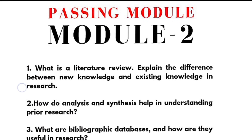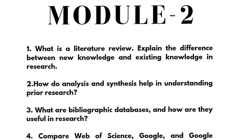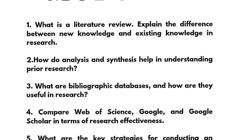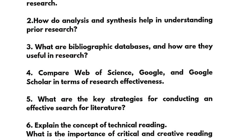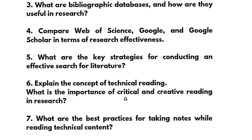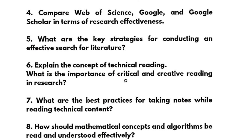Next we have Module 2, another passing module. What is a literature review — explain the difference between new knowledge and existing knowledge in research. How do analysis and synthesis help in understanding prior research. What are bibliographic databases and how are they useful in research. Compare Web of Science, Google, and Google Scholar in terms of research effectiveness. What are the key strategies for conducting an effective search for literature. Explain the concept of technical reading — what is the importance of critical and creative reading in research. What are the best practices for taking notes while reading technical content.